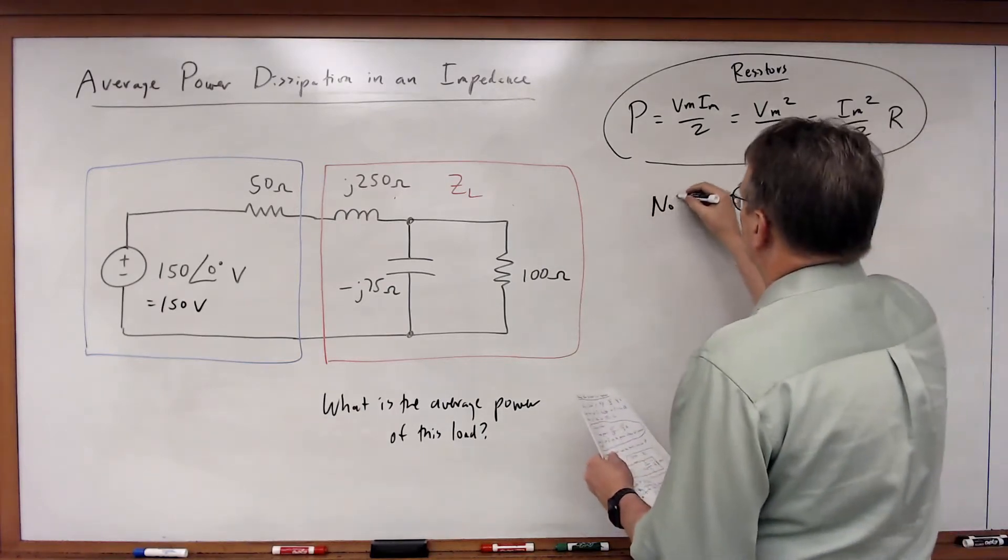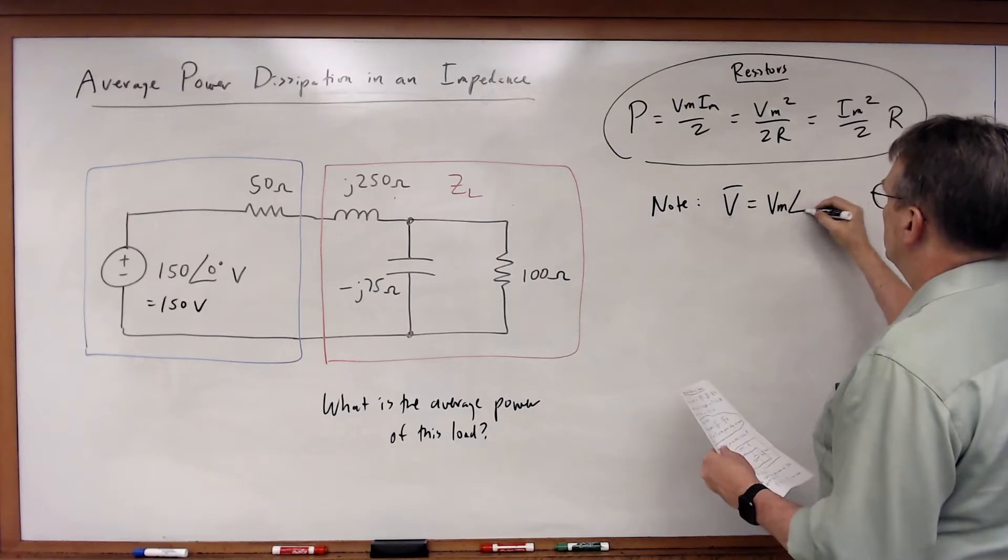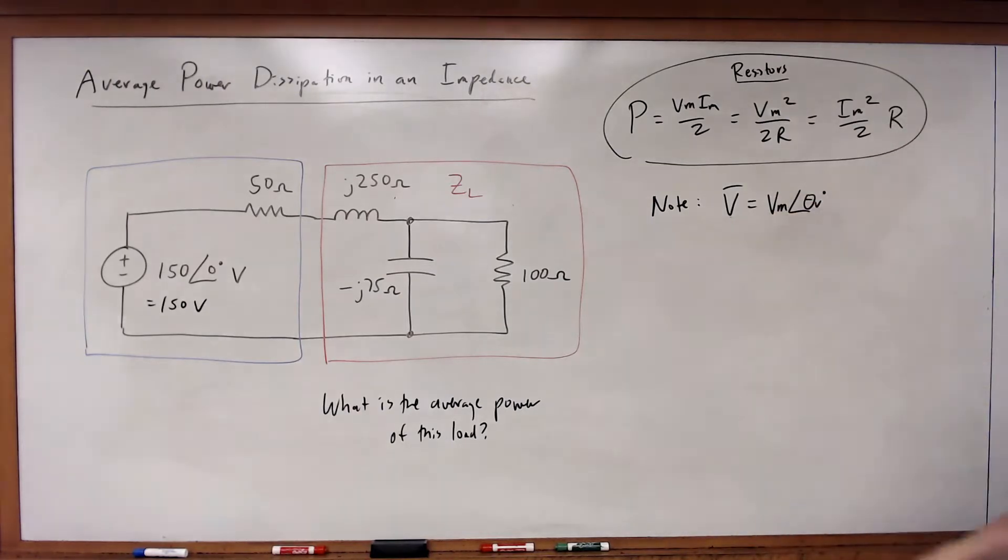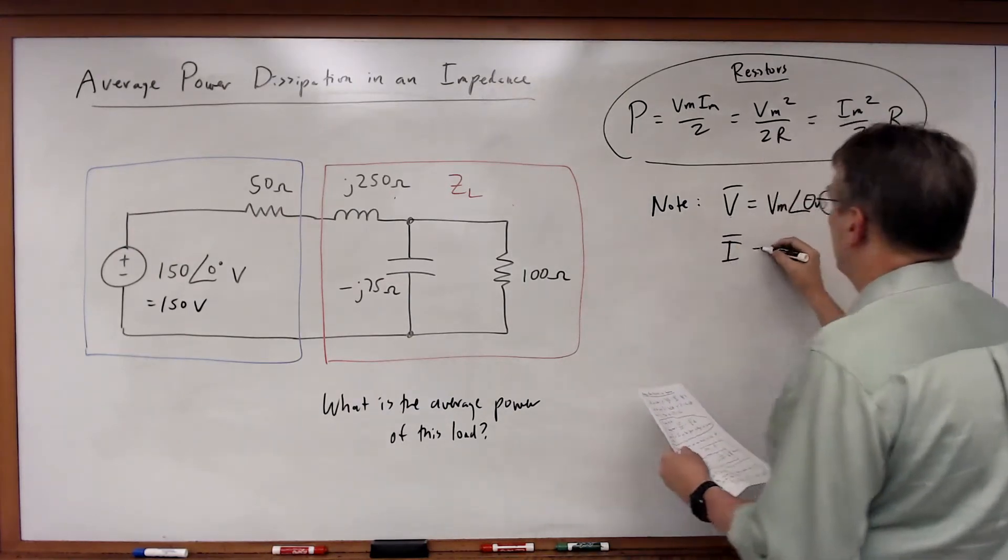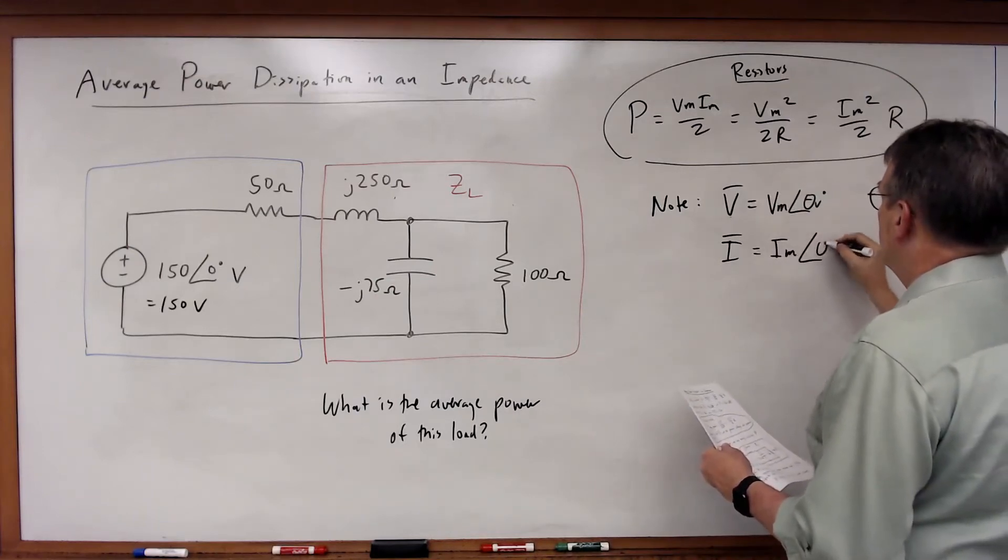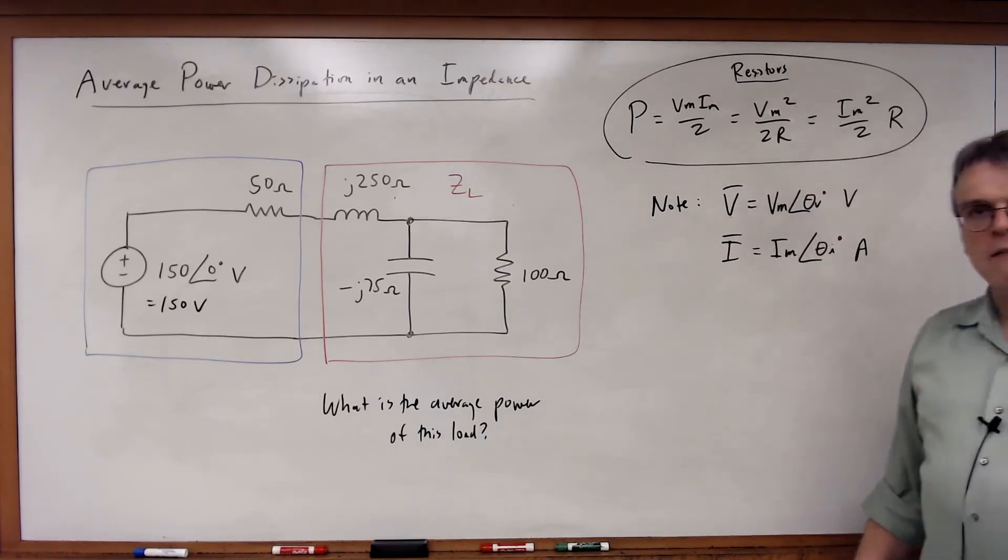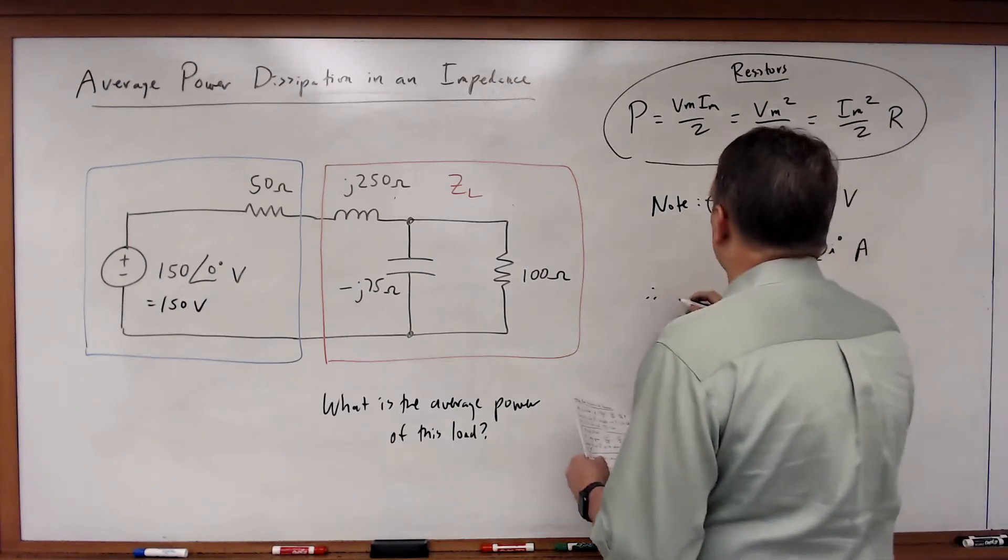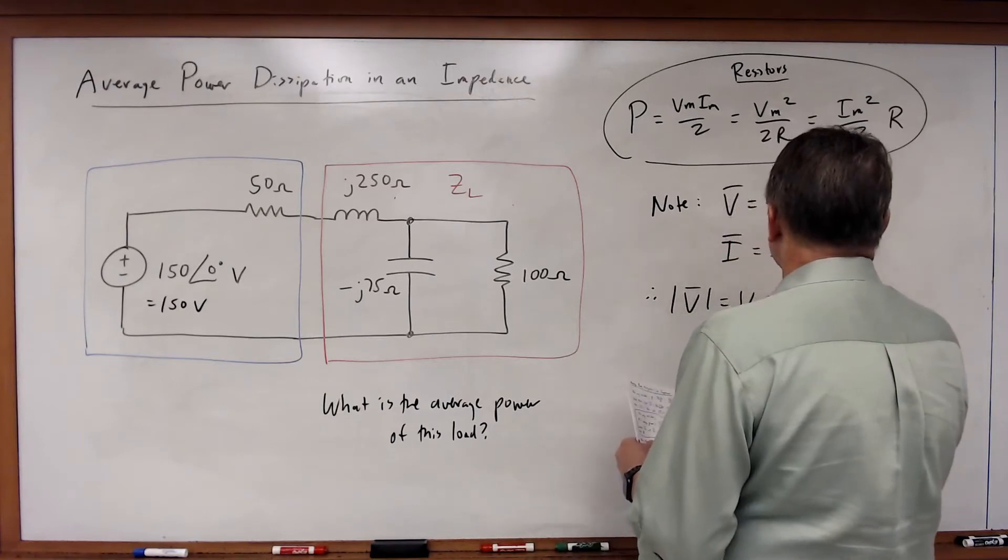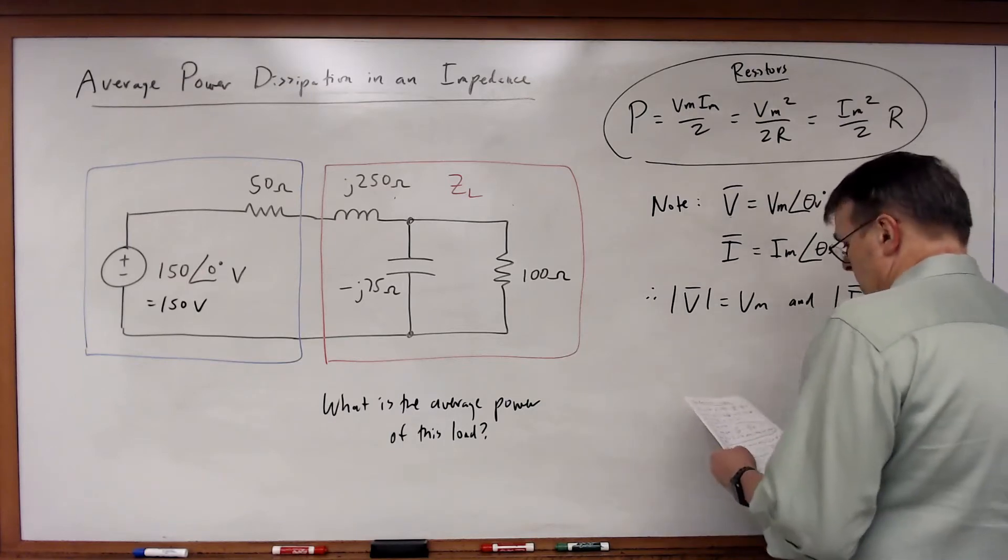We note that a voltage phasor is just Vm at a phase angle of theta sub V degrees, and a current phasor is Im at a phase angle of theta sub I degrees. These are the definitions of a phasor. So Vm and Im are really just the magnitudes of these phasors. Therefore, the magnitude of V is Vm, and the magnitude of I is equal to Im.